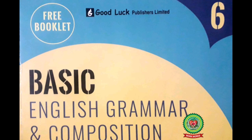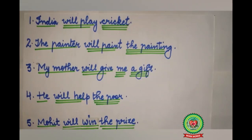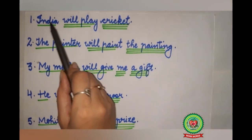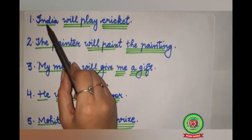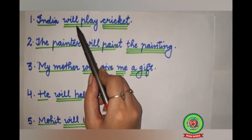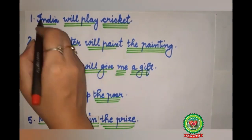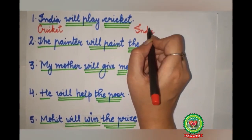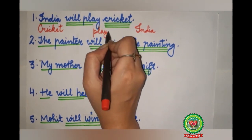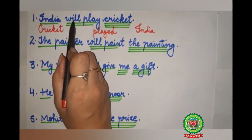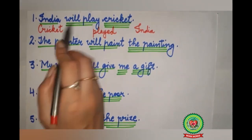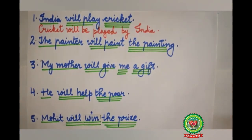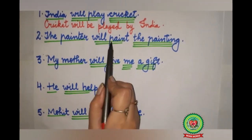Now we will discuss a few examples of active and passive voice for simple future and continuous tense. Here are some examples of simple future tense. First example: 'India will play cricket.' Who? India — subject, single underline. 'Will play' — action word, double underline. What? Cricket — object, triple underline. Cricket comes in the beginning, India goes to the last, 'play' changes to its V3 form 'played', and 'will' changes to 'will be'. The sentence becomes: 'Cricket will be played by India.' Full stop.